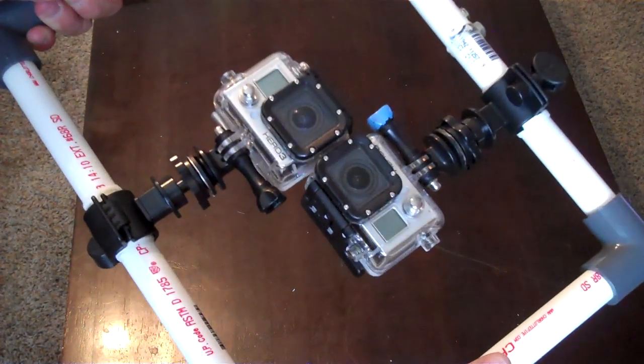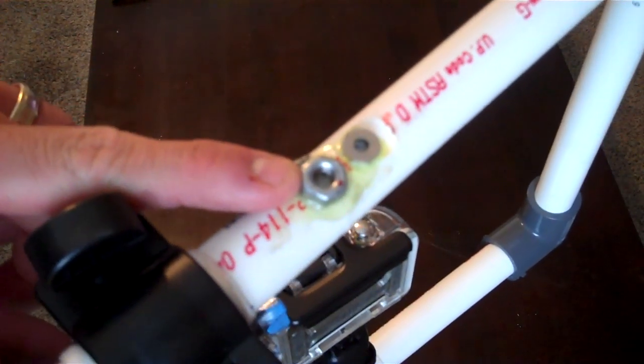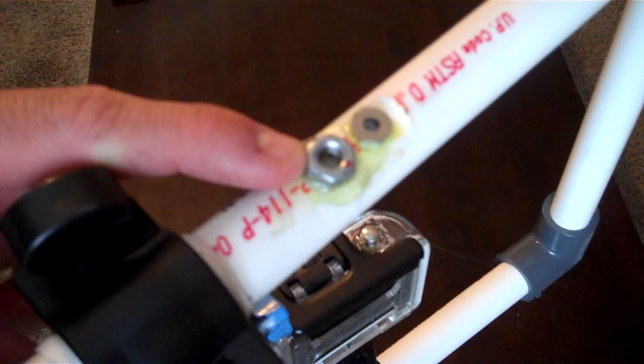Once everything is lined up you are ready to start filming. You can add the ¼ inch nut to the bottom so that you can mount it to a tripod. I have found that it is easiest if you grind down the PVC so that there is a level surface. Then epoxy your nut directly to the flat spot.